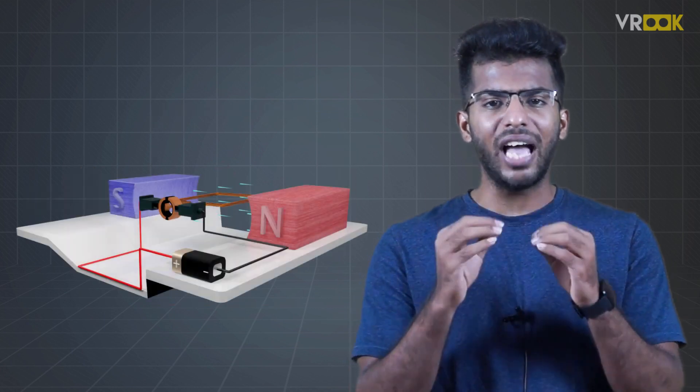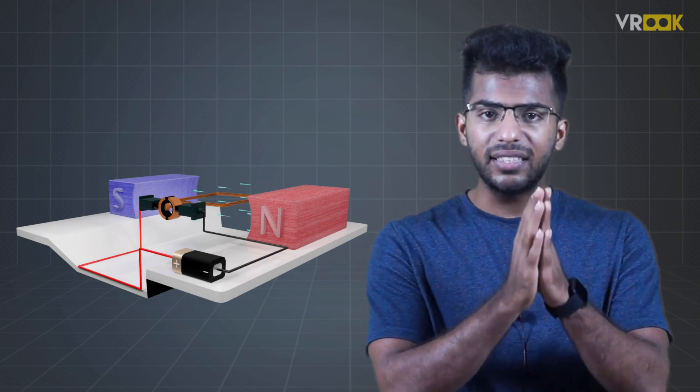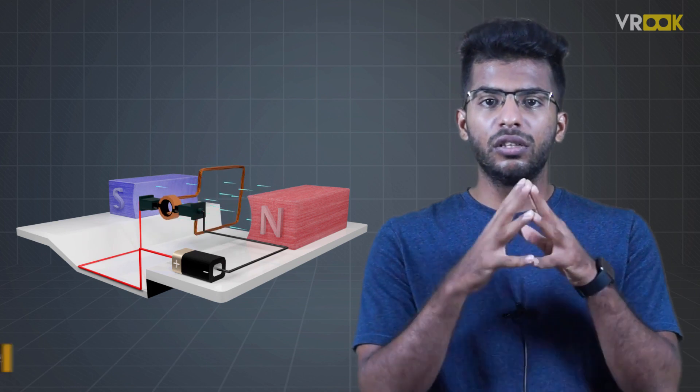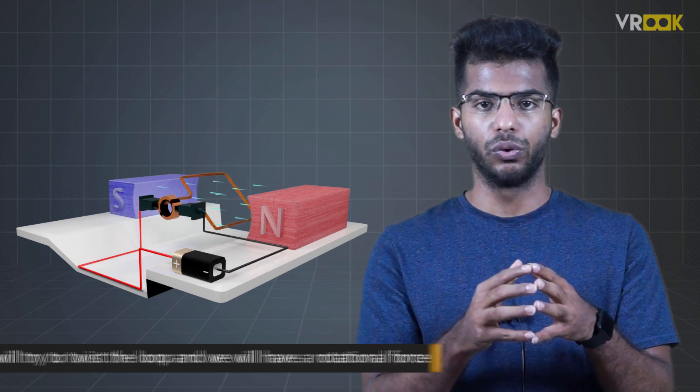Now, if we have a single loop which has two such conductors placed in the magnetic field, we'll get a rotational output. The forces will try to twist the loop and we'll have a rotational force.